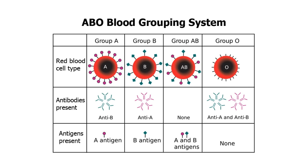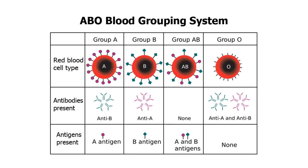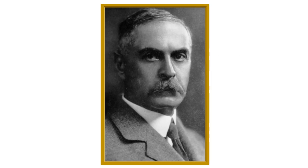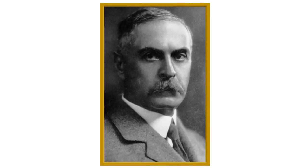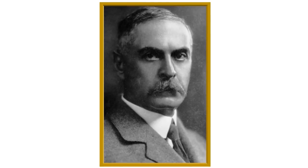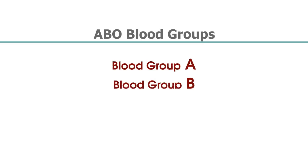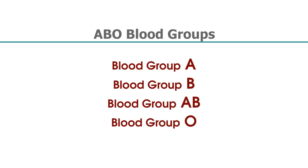According to the ABO blood grouping system discovered by Karl Landsteiner, there are 4 types of blood groups: Blood Group A, Blood Group B, Blood Group AB, and Blood Group O.